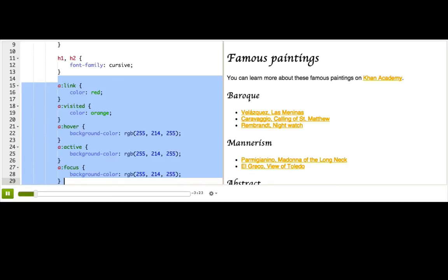They all start with a, and then a colon, and then a word. What does that colon mean? What could those rules be selecting for? Well, all of those things that start with a colon are called pseudo-classes.